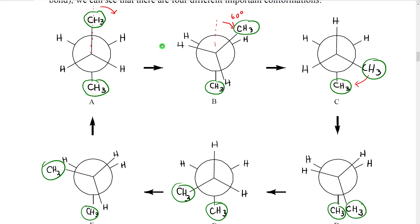We drew the methyl groups starting in a particular position — we didn't have to, but in this example I started with the methyl groups arranged 180 degrees apart from each other. I've also circled the methyl groups in green so that they stand out as different from the hydrogens.